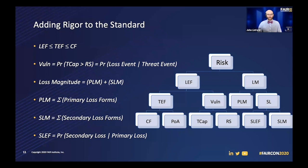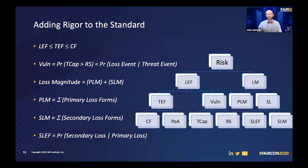We then also formalized that loss magnitude is equal to the sum of your primary loss magnitude and your secondary loss magnitude, which are in turn equal to — for primary loss magnitude — the sum of those primary loss forms, and for secondary loss magnitude — the sum of those secondary loss forms. This also came with updating the tree. Under loss magnitude, we now have PLM — primary loss magnitude — where before this had just been primary loss. This now allows us to have primary loss magnitude and secondary loss, rather than primary risk and secondary risk, which was potentially confusing. We then also finally added that equation for secondary loss event frequency, which we'd always said was a probability, not an actual frequency. We can now say that your secondary loss event frequency is the conditional probability of a secondary loss given a primary loss.